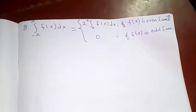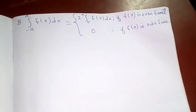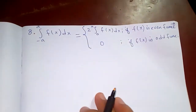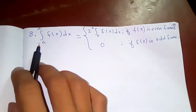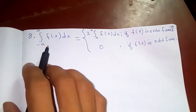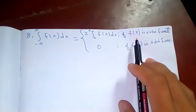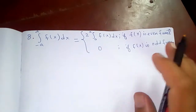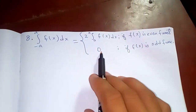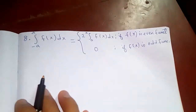Thanks for watching. Today we are going to prove the 8th property of definite integrals. This is the 8th part of our properties. The integral from minus a to a, where a is a constant, of f(x) dx equals two times the integral from 0 to a of f(x) dx if f(x) is an even function, and zero if f(x) is an odd function.